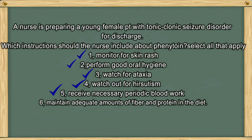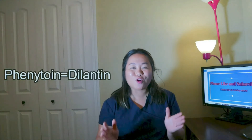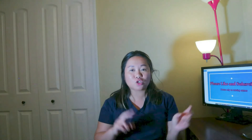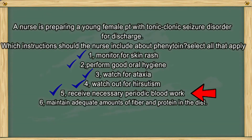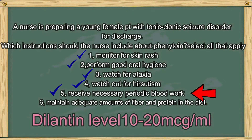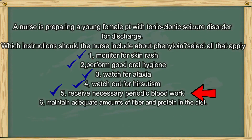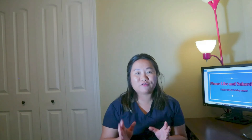If your answer is 1, 2, 3, 4, and 5, you are right. Phenytoin, also called Dilantin, might cause a mild rash. If the rash appears about 10 days to 2 weeks after starting the drug, the patient should notify the physician and stop taking the medication. A very common side effect of Dilantin is gingival hyperplasia, so option 2 is correct. Hirsutism is the excess growth of hair in unusual areas, especially the jaw and neck. The patient is a young female, so she might really pay attention to her appearance, so remind her of that. Dilantin dosing is highly individualized and requires frequent monitoring. The patient should maintain a Dilantin level between 10 to 20 micrograms per milliliter, so we should closely monitor blood work to avoid toxicity. Although adequate fiber and protein are part of a healthy diet, they are not required specifically for a patient taking Dilantin.